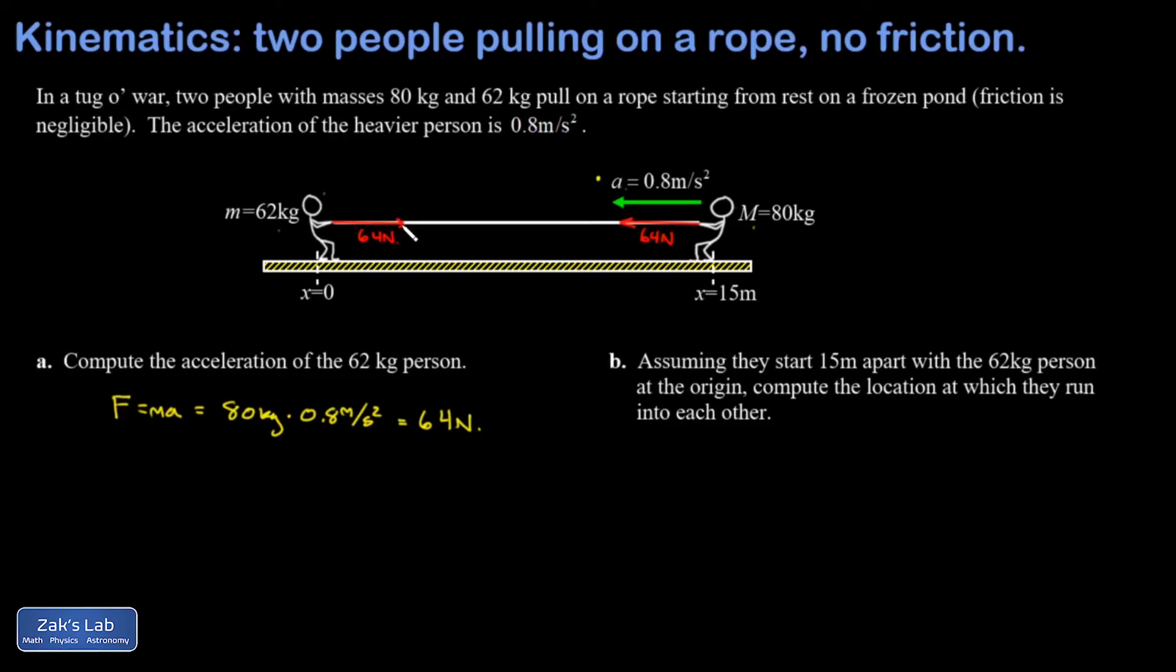Another way to say it is that the tension in the rope is 64 newtons, and whether you feel the tension at the left end or the right end, it's going to be 64 newtons. This allows us to get the acceleration of the lighter person: a equals F over m.